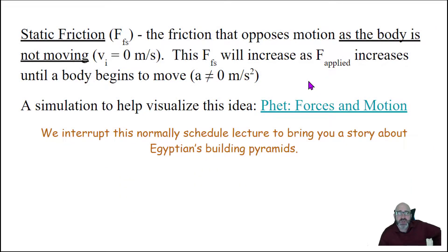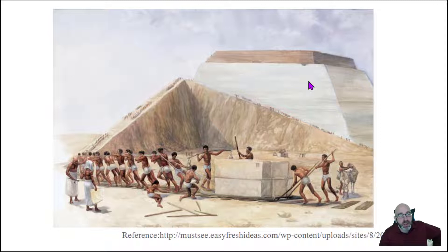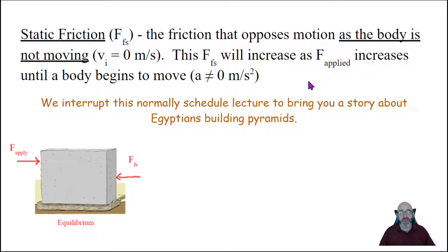We interrupt this normally scheduled lecture to bring you a story about how the Egyptians built the pyramids. Now I hope that you recognize that the pyramids are these marvels of engineering feats that the Egyptians were able to build with pretty simple tools. But they understood physics as well. So if you imagine the pyramids are made of these giant blocks that have tons and tons of mass, they also have tons and tons of inertia. And so if one worker on the pyramids were to apply a force in this direction, you'll notice it's red because it's in the x direction, the force of friction will push back upon it. And the block doesn't move.